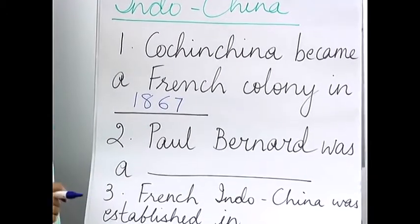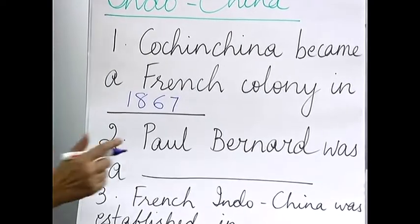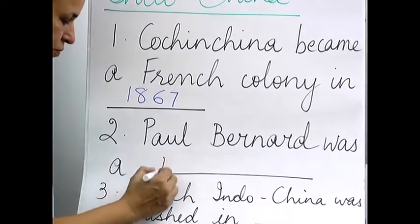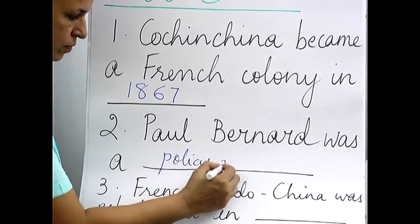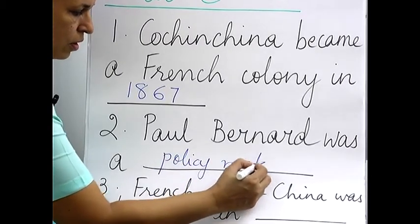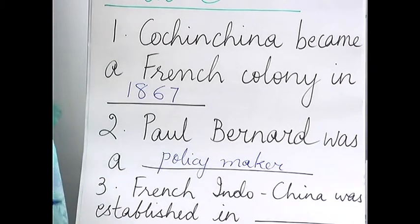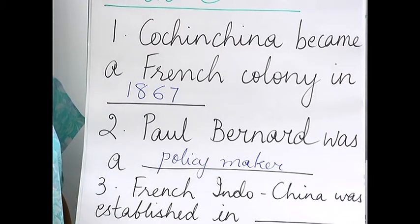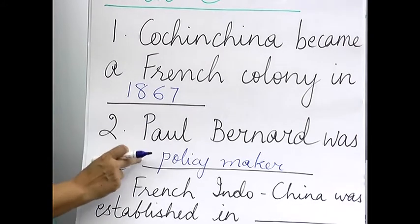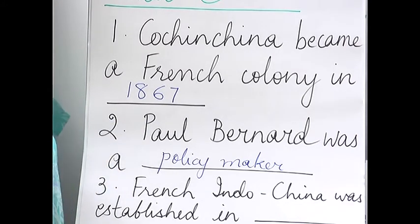Second one: Paul Bernard was a policy maker. As a one-line answer, they can ask what was Paul Bernard, or name a policy maker. Normally they will give you his name and ask what was his profession.